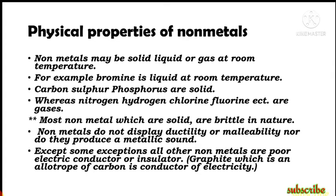All other nonmetals are poor electric conductors or insulators, except graphite, which is an allotrope of carbon and is a conductor of electricity. So generally nonmetals are non-conductors or act as insulators, or sometimes they are very poor conductors, but graphite is a conductor of electricity. We will discuss allotropy in more detail shortly.